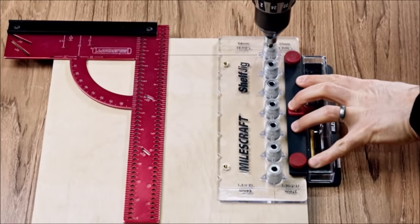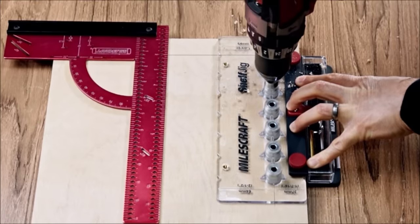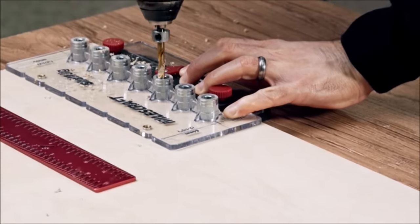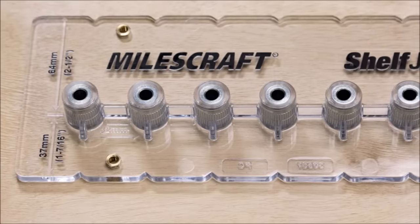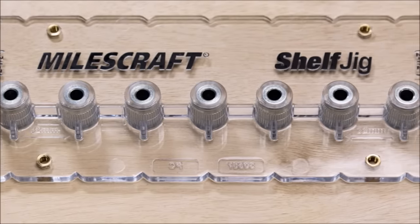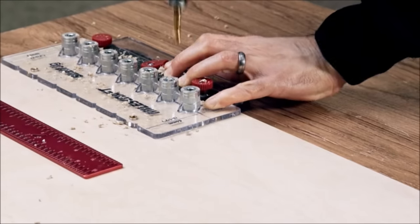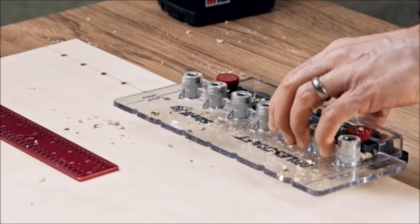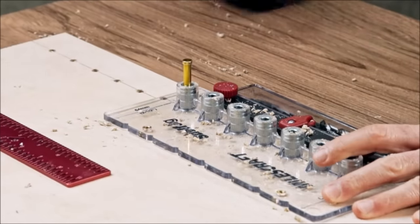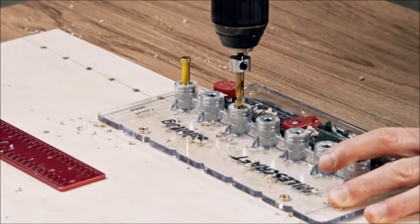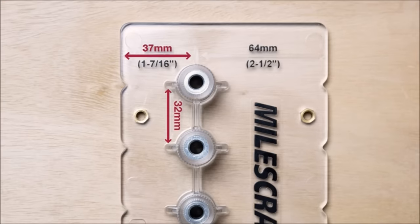Featuring a standard 32-millimeter spacing between each hardened metal guide bushing, this jig ensures consistency and reliability in your shelf placements. The detachable fence adds to its adaptability, allowing for quick adjustments to provide either 37 millimeters or 64 millimeters offsets, catering to the specific requirements of your project. Convenience is key, and the Miles Craft Shelf Jig excels with centering notches that facilitate easy alignment, streamlining the setup process. The inclusion of a quarter-inch and five-millimeter indexing pins allows the jig to be repositioned, enabling the creation of an unlimited series of holes, making it a versatile and dynamic tool for any woodworking enthusiast.